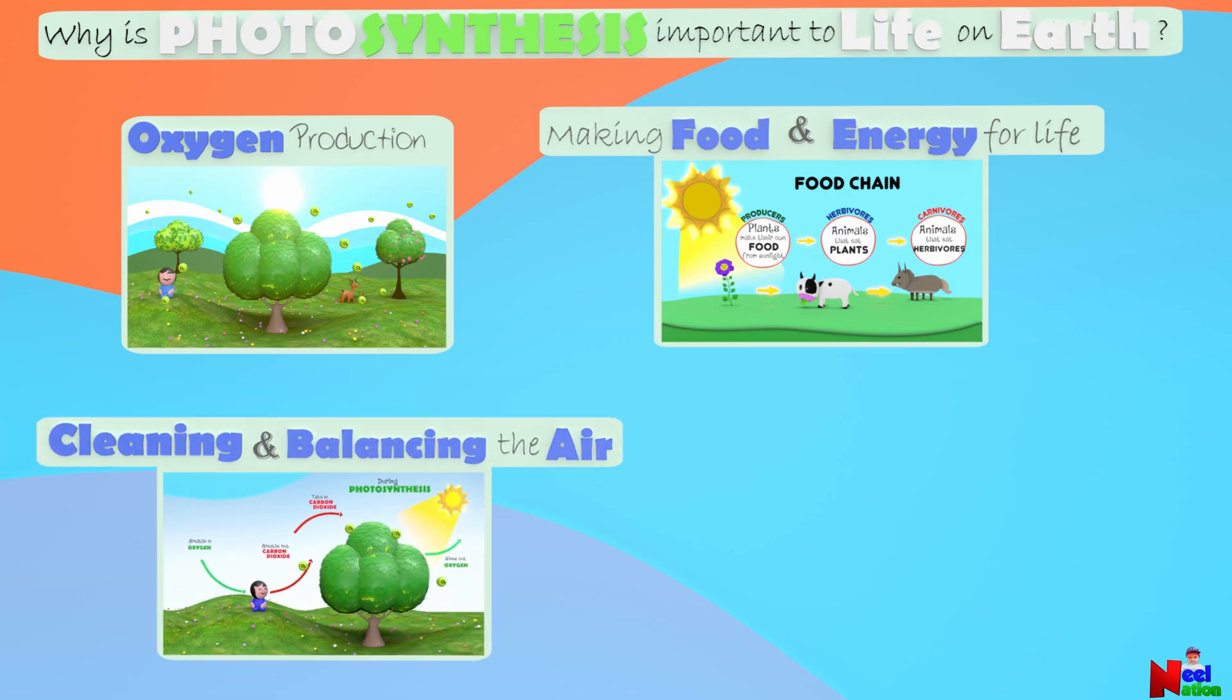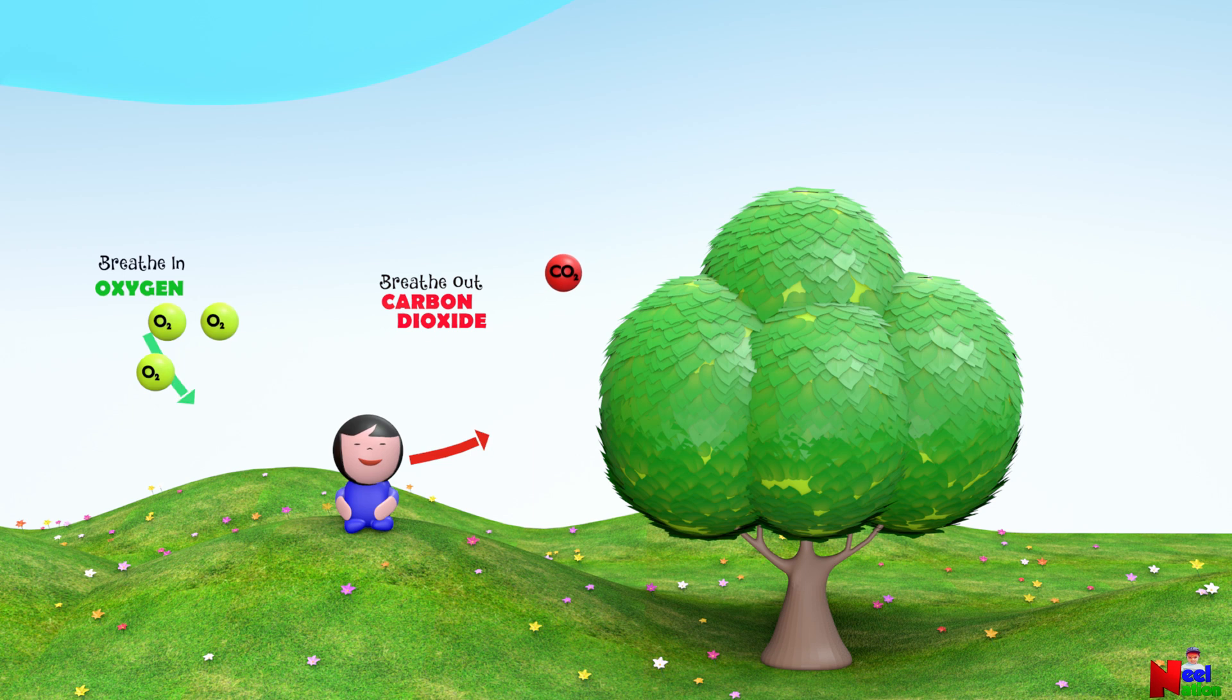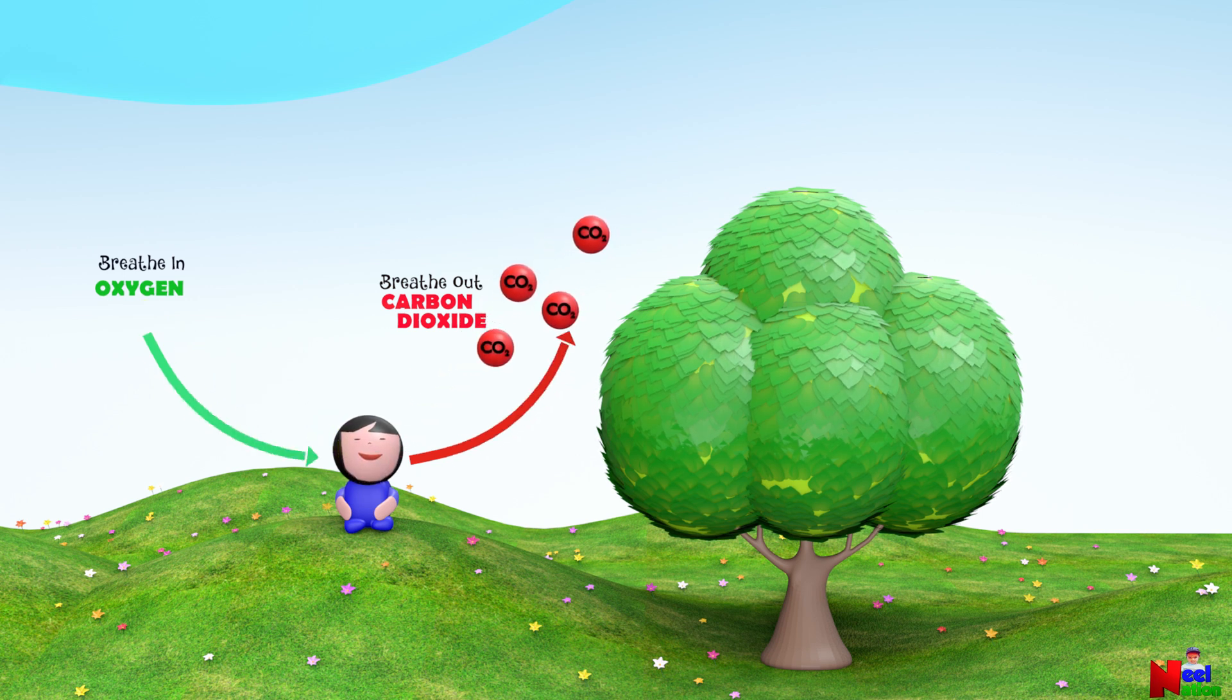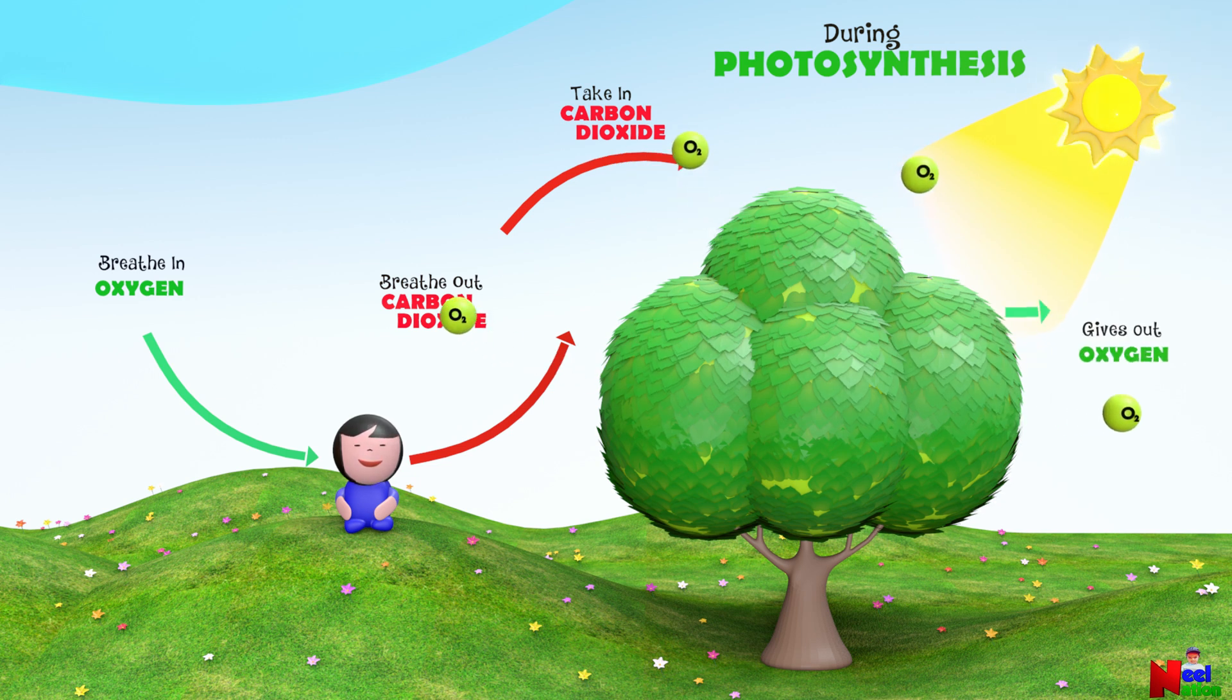Cleaning and balancing the air. Humans and many animals need oxygen to breathe. And we release carbon dioxide when we exhale. During photosynthesis, plants take in this carbon dioxide and release oxygen back into the air. This process not only keeps the air clean, but also helps prevent too much carbon dioxide from making the earth too warm. Photosynthesis ensures the air stays healthy for us to breathe.